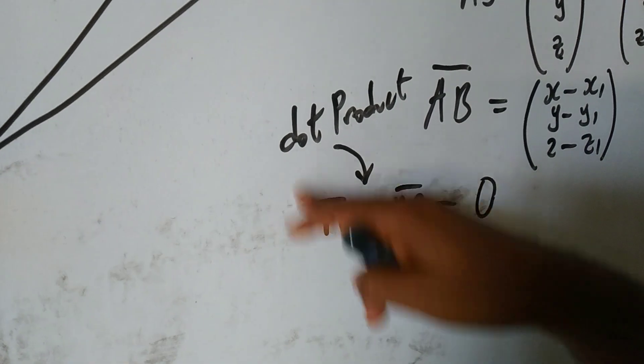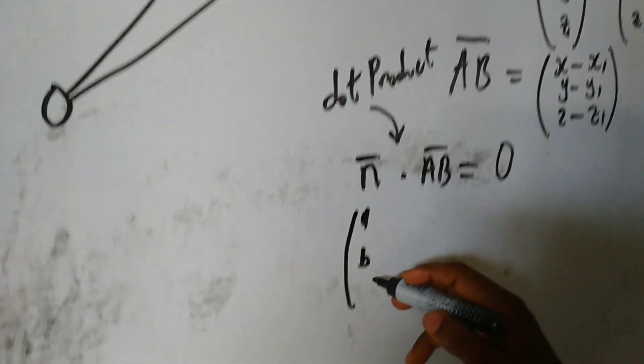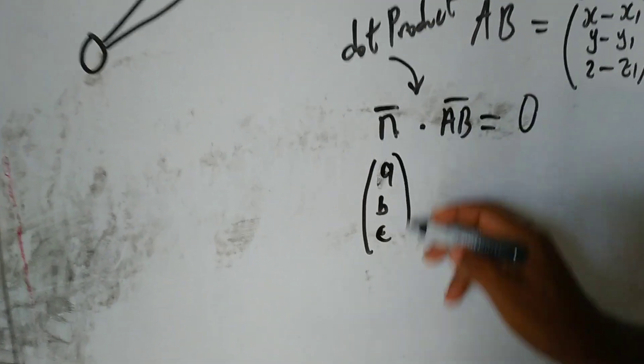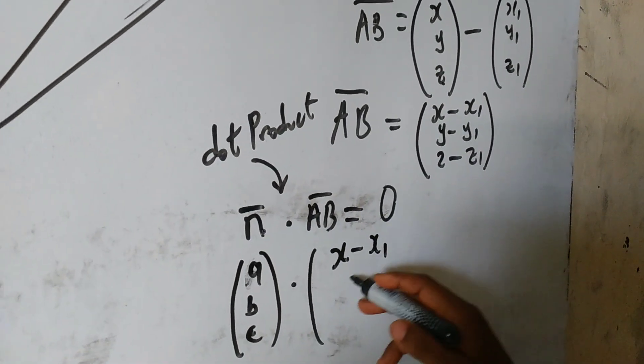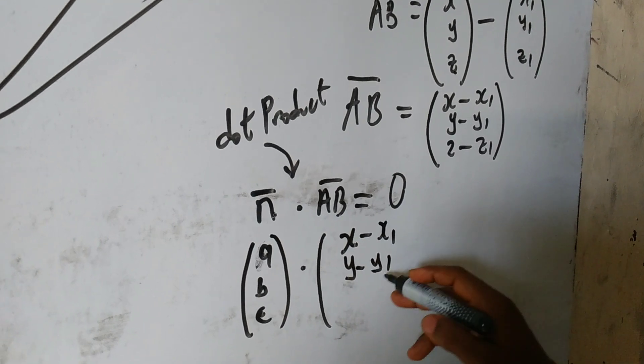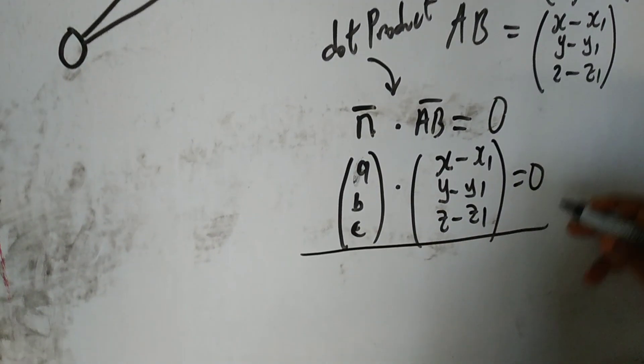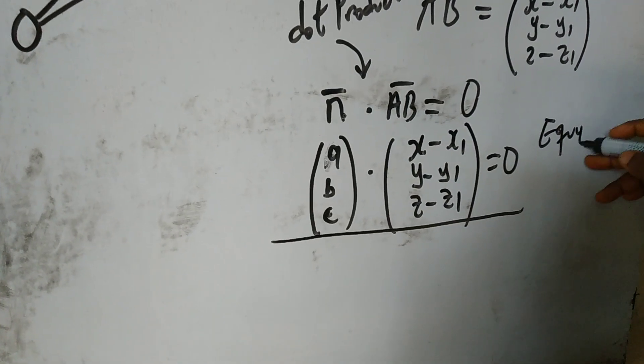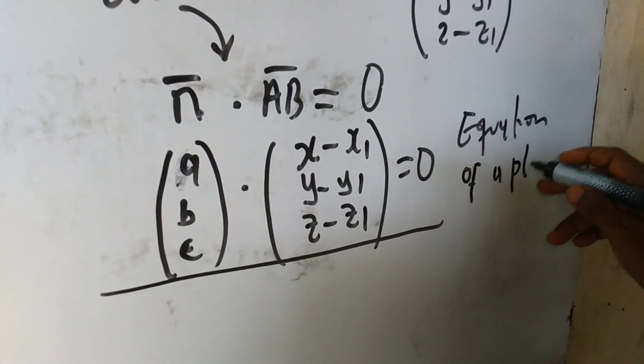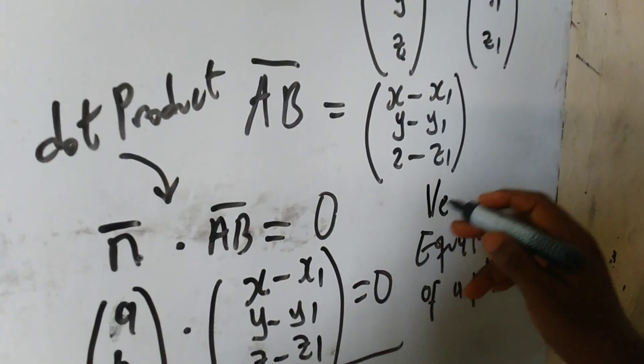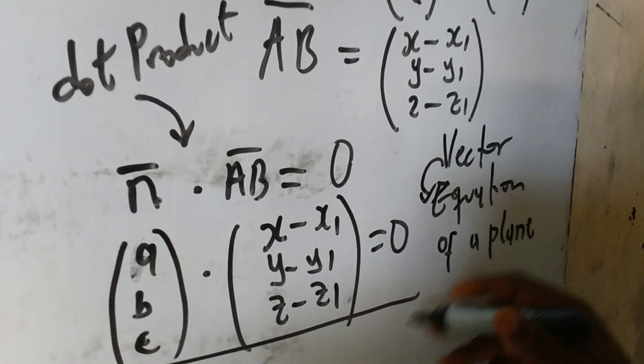Now, vector N bar is ABC. So, I would rather write them as A, B, and C, dot vector AB is going to be X minus X1, Y minus Y1, and Z minus Z1 is equal to 0. So, what I have here is the equation of a plane. Or, I would rather call it vector equation because it involves vectors. Vector equation of a plane.